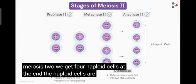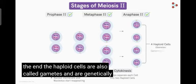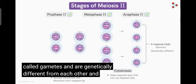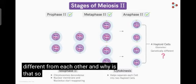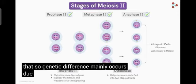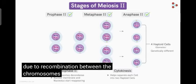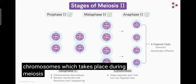The haploid cells are also called gametes and are genetically different from each other. And why is that so? Genetic difference mainly occurs due to recombination between the chromosomes which takes place during meiosis I.